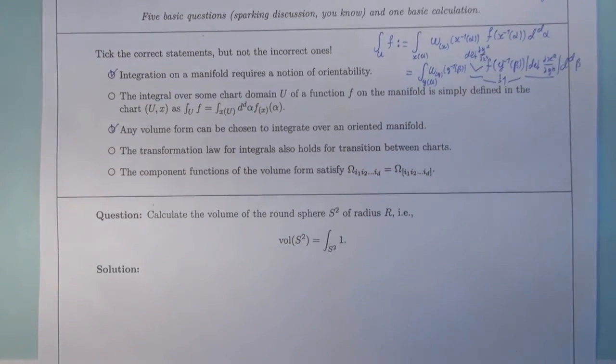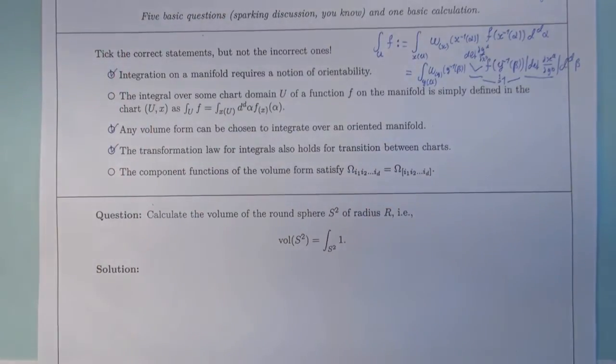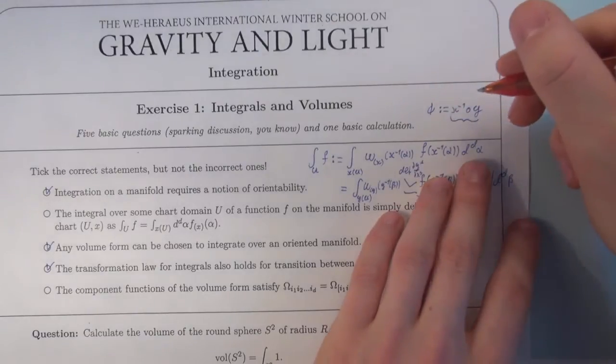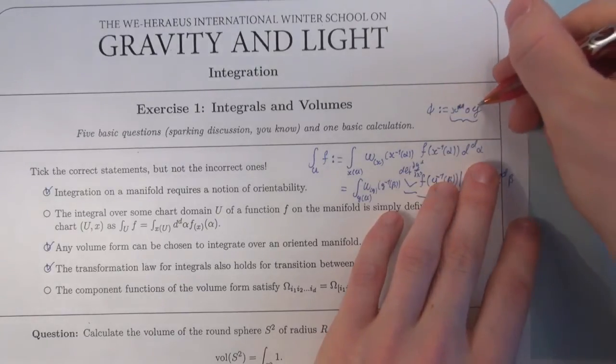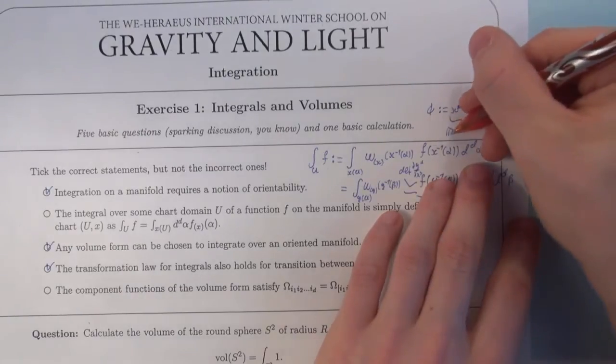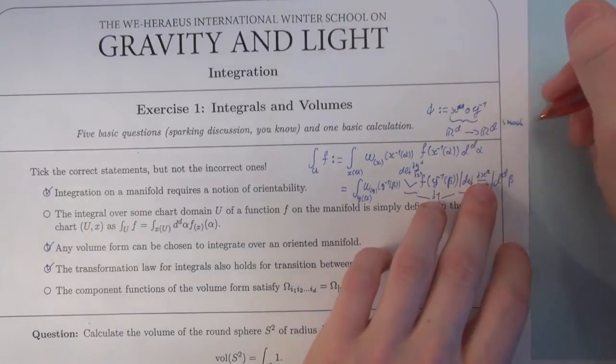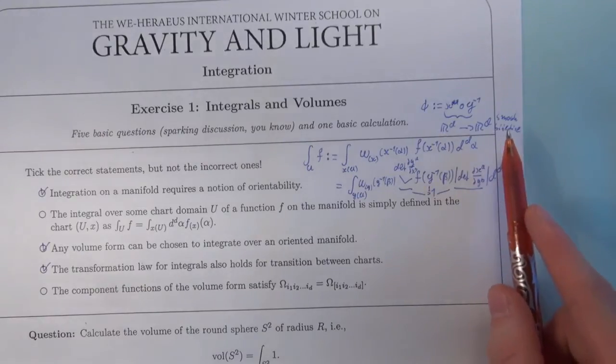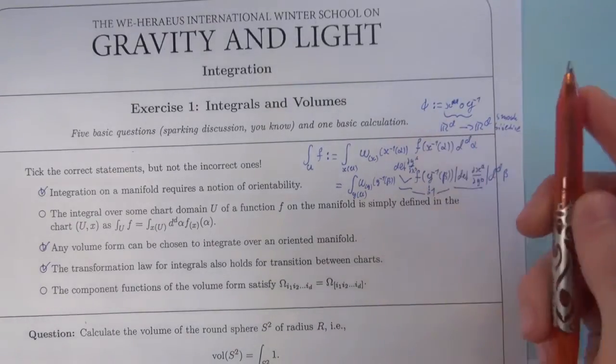Fourth, the transformation law for integrals also holds for transition between charts. Right. And why is that? Because the transition between charts is a map—oh, I made a small mistake here. It just says inverse on this side. And then it's a map from Rd into Rd, which is smooth and bijection. And it is exactly this kind of maps for which you can apply the transformation law for integrals, for multidimensional integrals. So, it's true.